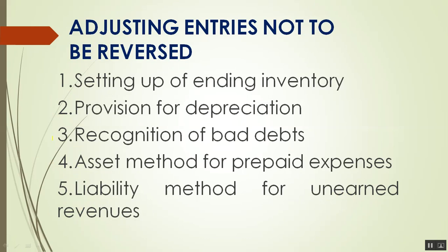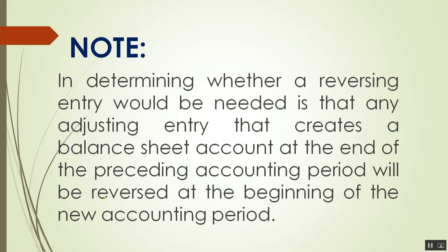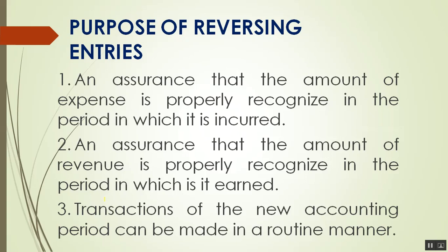What is NOT reversed includes: setting up of ending inventory, provision for depreciation, recognition of bad debt, asset method for prepayment of expenses, and liability method for unearned revenue. In determining whether a reversing entry is needed, any adjusting entry that creates a balance sheet account at the end of the preceding period will be reversed at the beginning of the new period — to ensure that the amount of expense is properly recognized in the period incurred, that revenue is properly recognized in the period earned, and that transactions of the new accounting period can be recorded in the routine manner.